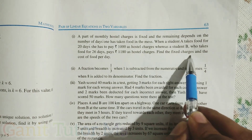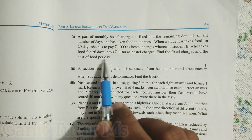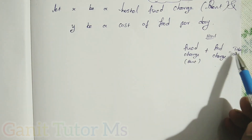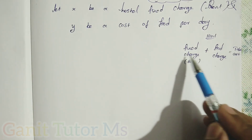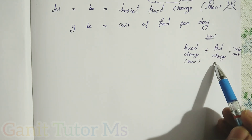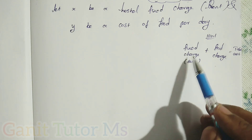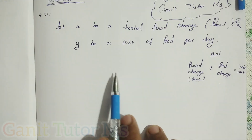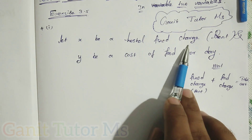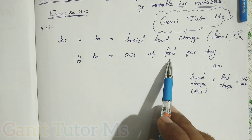Find the fixed charges and cost per day. As already said, the total charge of the hostel is fixed charge — that is the rent — plus food charge. We don't know what is the fixed charge, that is the rent of the hostel. So let x be the hostel fixed charge, that means rent, and y be the cost of food per day.